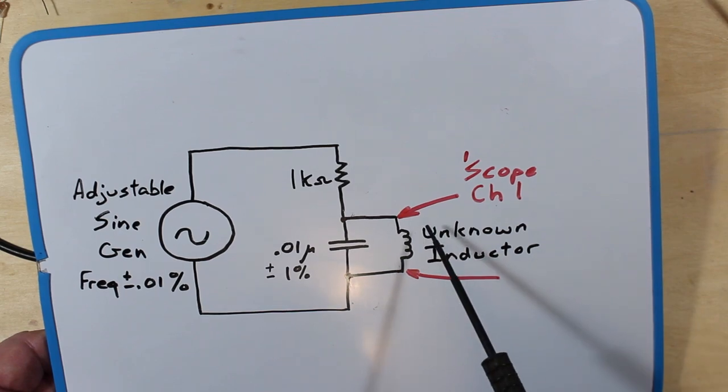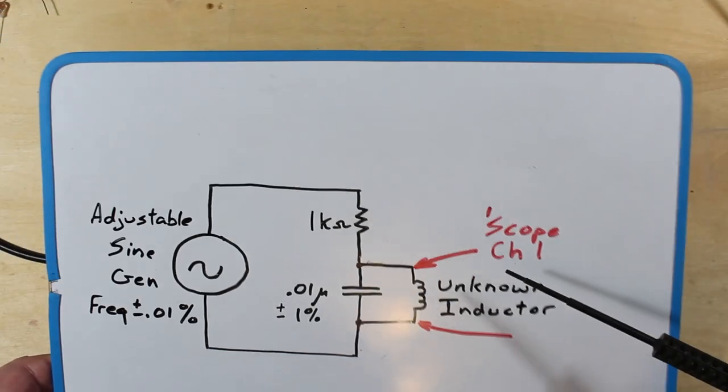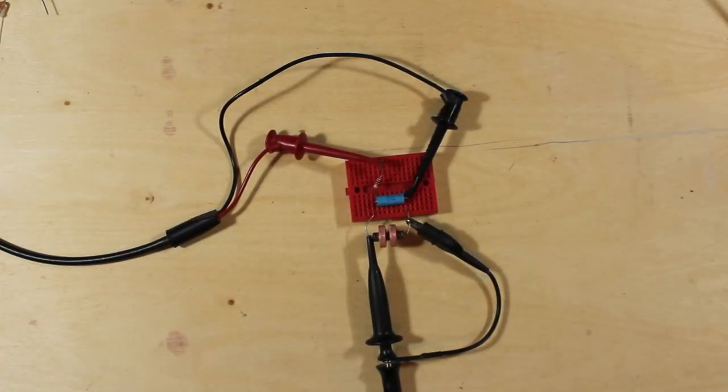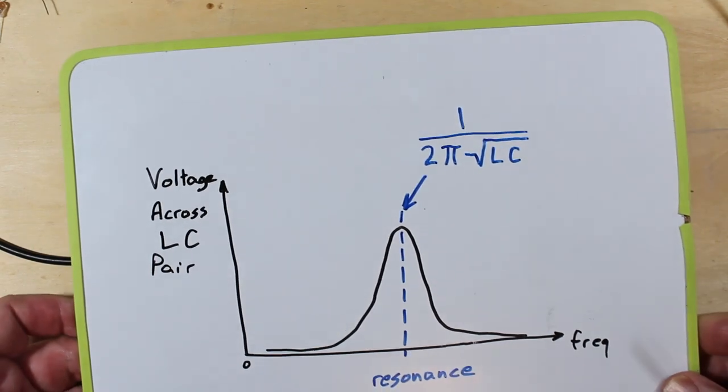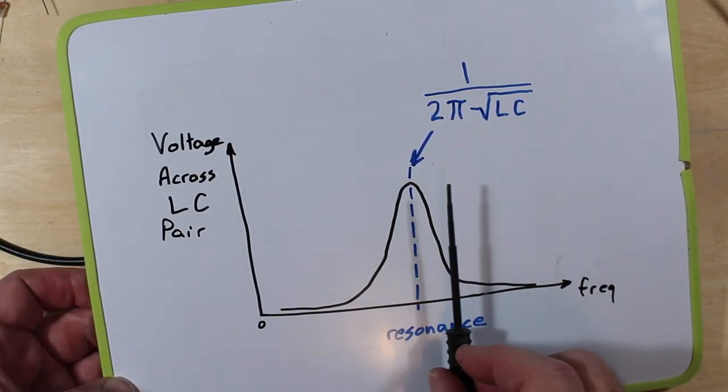And we're going to use scope channel 1, the yellow trace here, and have a look at this. And here's what we can expect. Here's the way it's going to operate. As we run our frequency back and forth here, the voltage that appears across this inductor is going to go up or down depending on where it is in this tune.